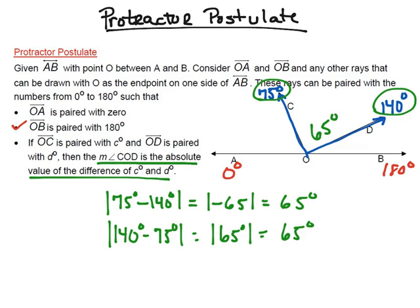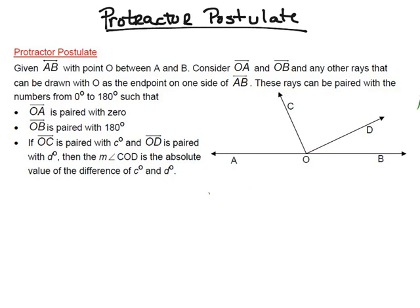This is called the protractor postulate, and it helps us find this angle by using these two angles and subtracting them. I'm going to go ahead and work through one more example here just in case there was any confusion on that first example.